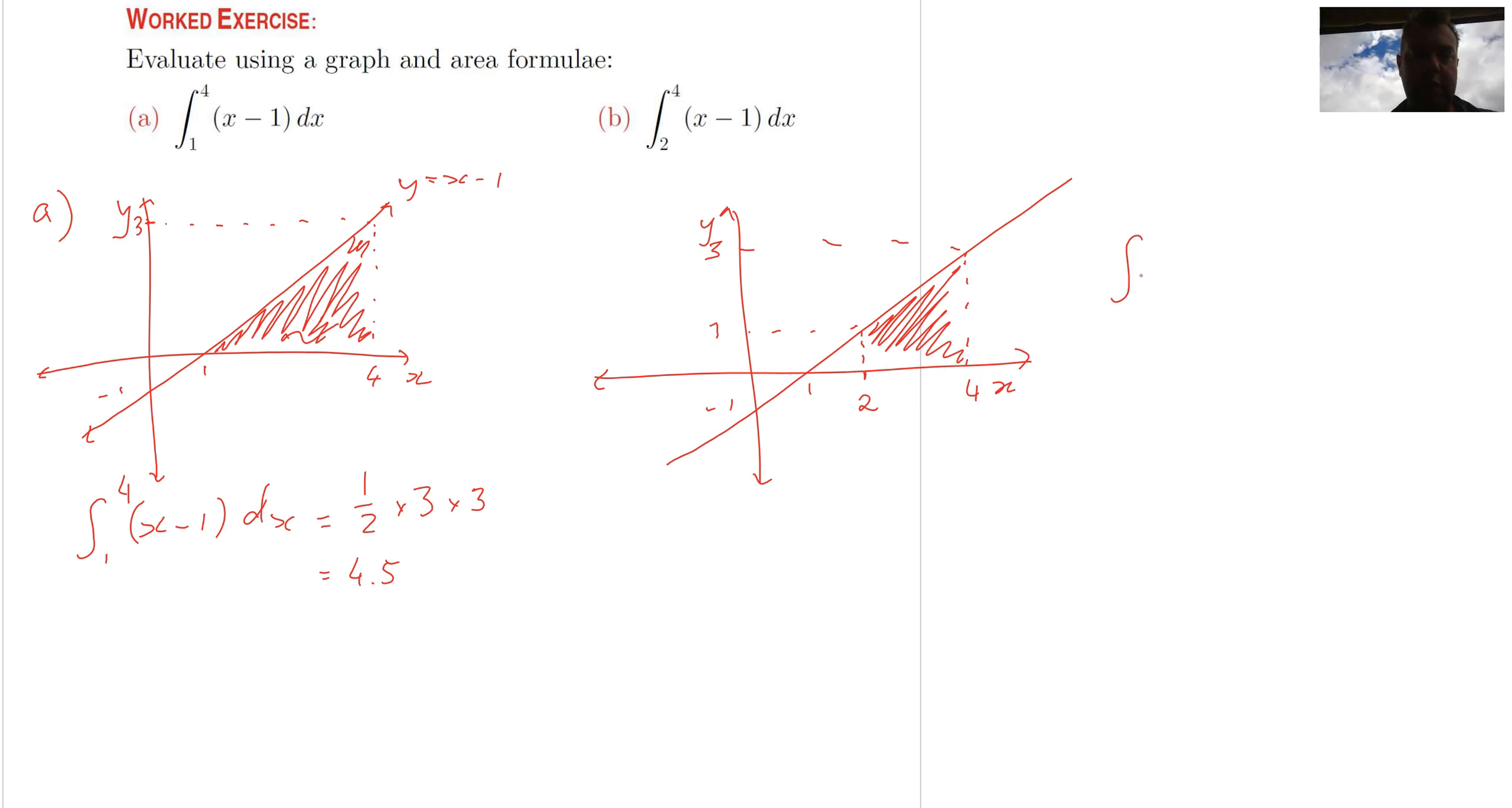So the integral from, this time from 2 to 4 of x minus 1 dx equals the average of those sides, so it's 3 plus 1 over 2, multiply that by the distance between them, 4 minus 2, and that is 2 by 2 equals 4. Slightly less than this region here. That probably makes sense, doesn't it? Indeed it does.